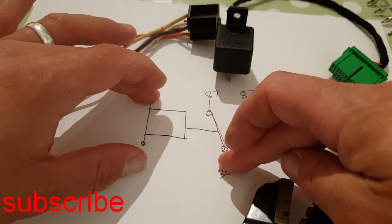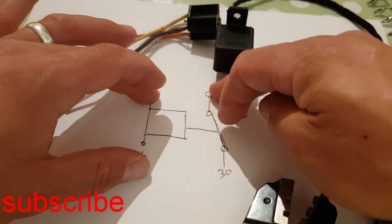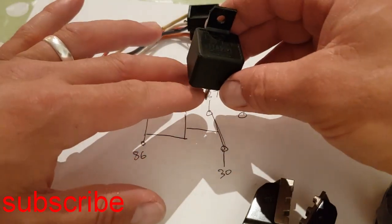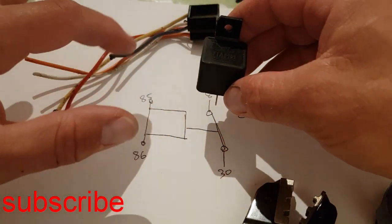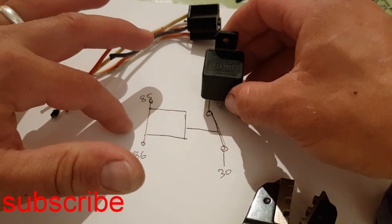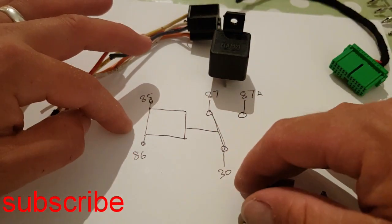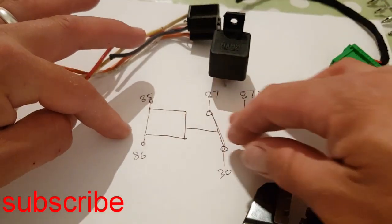So you can have thick 30 amp cable going into the relay and then 30 amp cable coming out, and you only need very thin wiring running into the cab for the switch. So that is how a relay works.